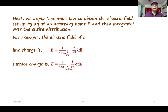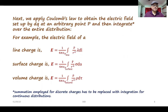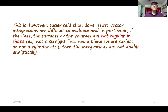The field of a volume charge is E equal to 1 over 4 pi epsilon naught, integrated over the volume, of r-hat over r squared times rho dV. Regarding the asterisk: the summation employed for discrete charges has to be replaced with integration for continuous distributions.